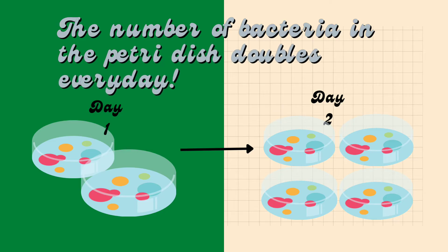This problem says that the number of bacteria doubles in a petri dish every day. In the previous day, the number of bacteria in the petri dish is half of what is in the current day. So for example, the half of the number of bacteria in the third day is the number of bacteria in the second day.